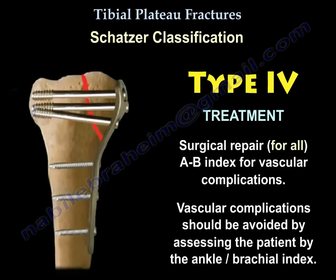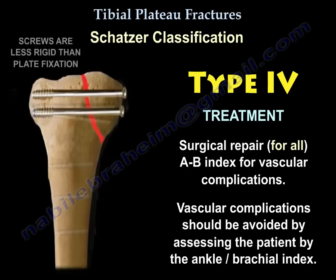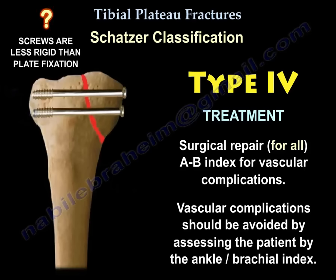Treatment for Type 4 is surgical repair for all of them. The ankle brachial index should be performed for vascular complications — you should do it in all Type 4 tibial plateau fractures. Screws alone provide less rigid fixation; an anti-glide plate or buttress plate is probably the ideal treatment for this type of fracture.